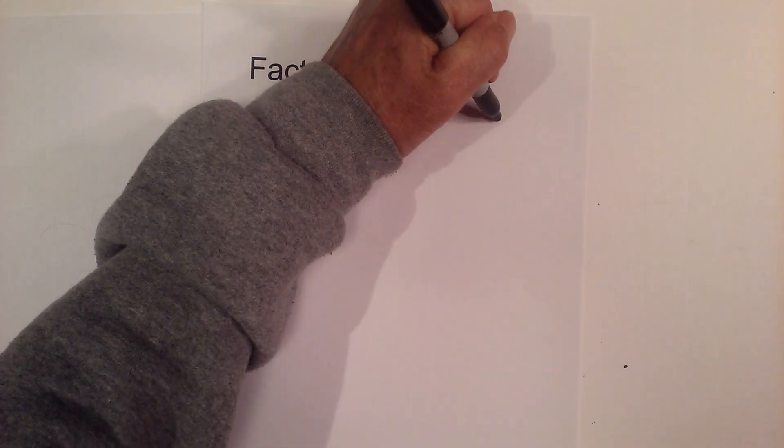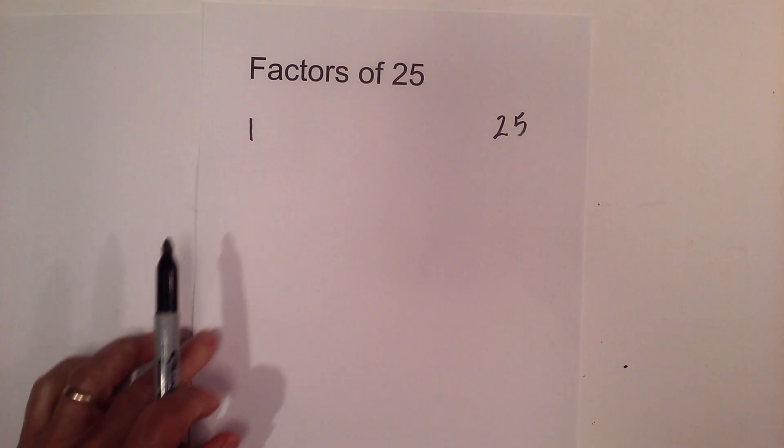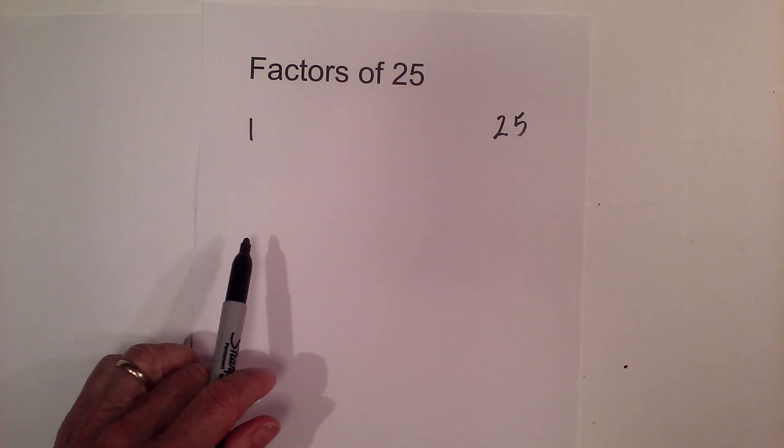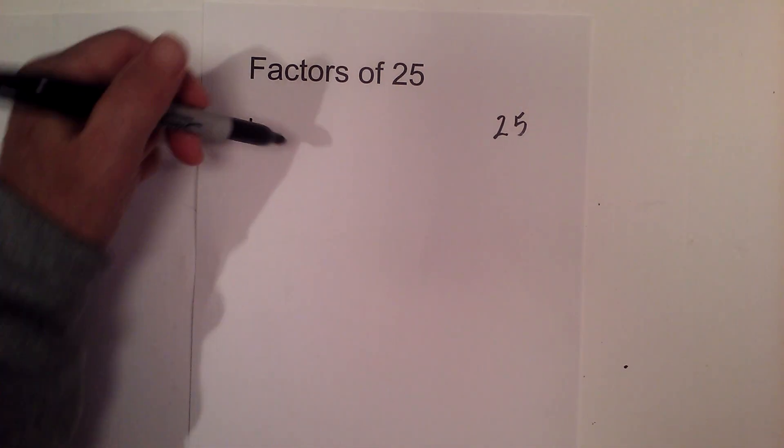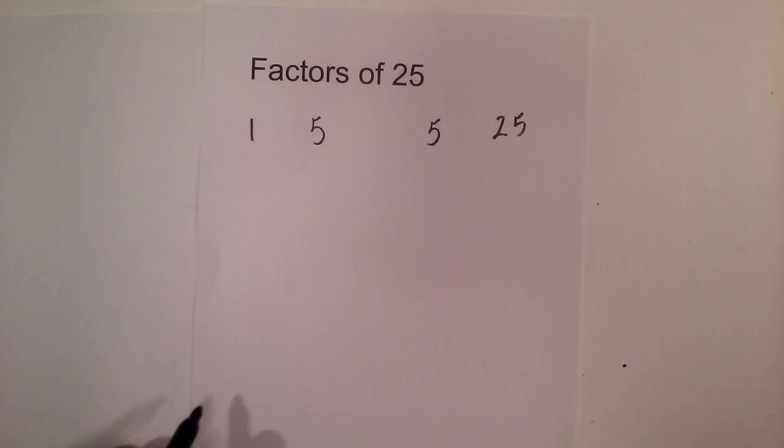2 does not go into 25, nor does 3 or 4, but 5 times 5 equals 25. There's no more numbers in between, so these are the factors.